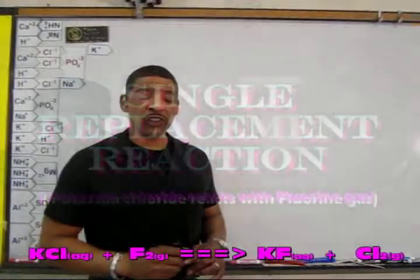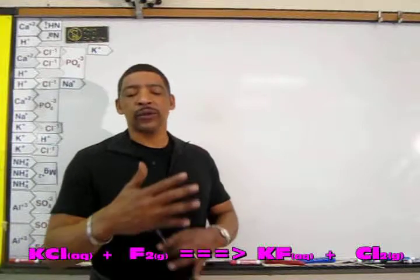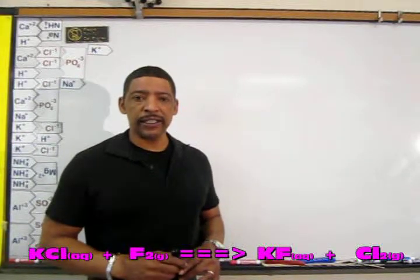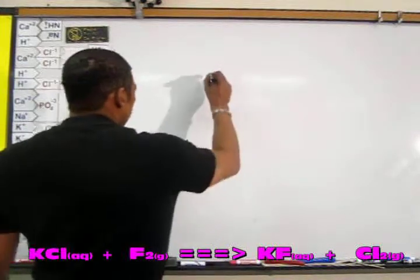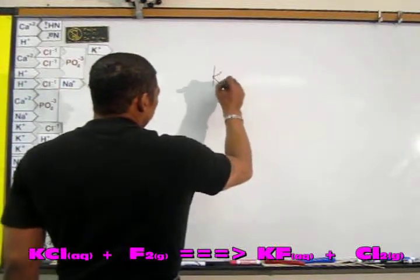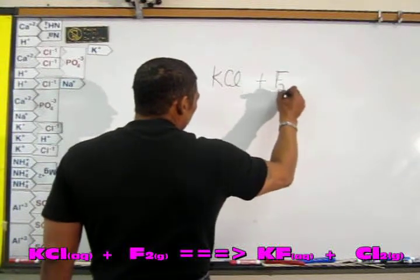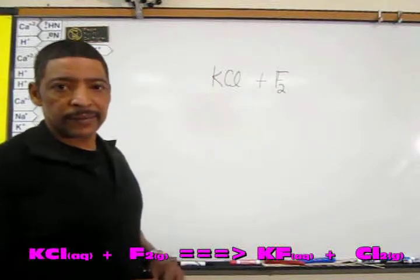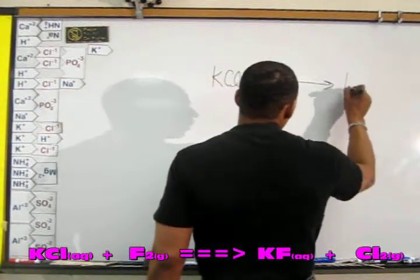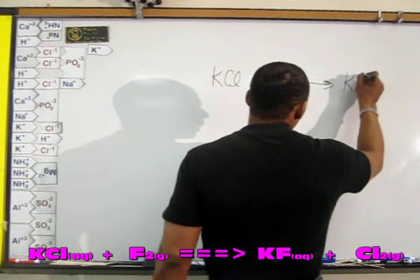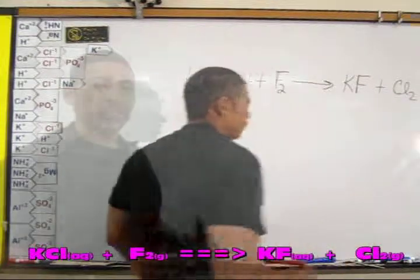Half reactions may also be written for reactions in which non-metals undergo oxidation and reduction. Consider the following reaction where potassium chloride reacts with fluorine gas to produce potassium fluoride and chlorine gas.